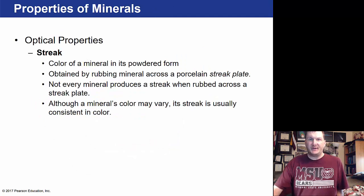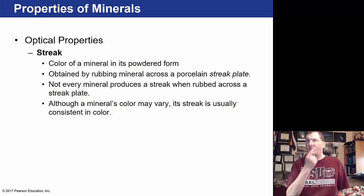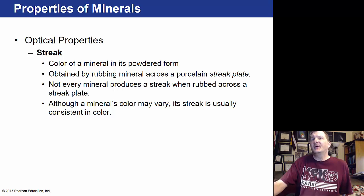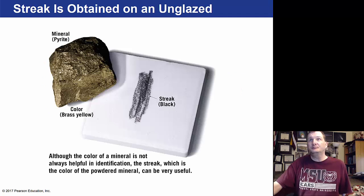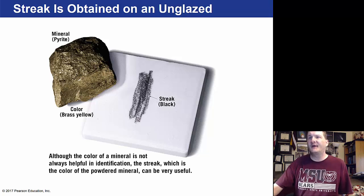We can look at streak — the color of a mineral in powdered form, obtained by rubbing the mineral across a porcelain streak plate. Not every mineral produces a streak, but a mineral's color may vary while its streak is usually consistent. For example, pyrite has a brassy yellow color, but when streaked across a ceramic plate, it makes a black streak. The streak is very helpful for identification.